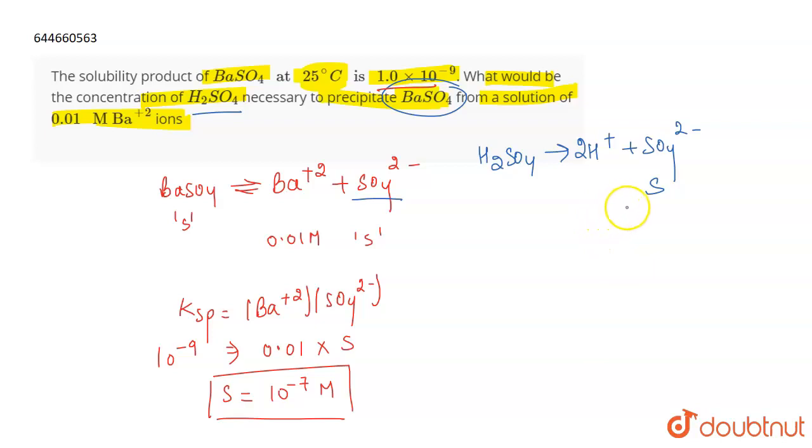of SO4²⁻ to H2SO4 is the same, it means the solubility for H2SO4 is also going to be S. The value of S is 10^-7 molar. Therefore, the concentration of H2SO4 required to precipitate BaSO4 will be 10^-7 molar, and that's the correct answer.